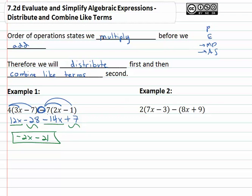Similarly, with this second example, we can distribute through the parentheses, and then combine like terms. 2 times 7x is 14x, and 2 times negative 3 is negative 6. With the second parentheses, there's just the negative to distribute.